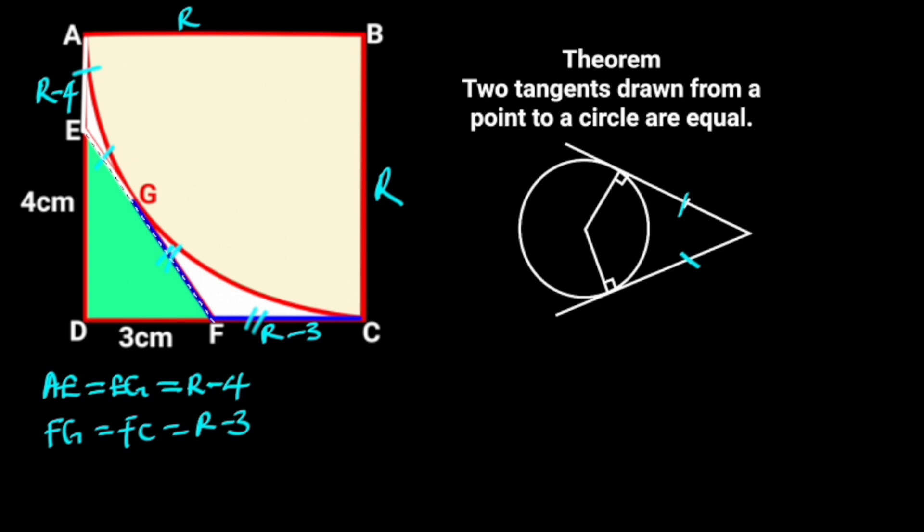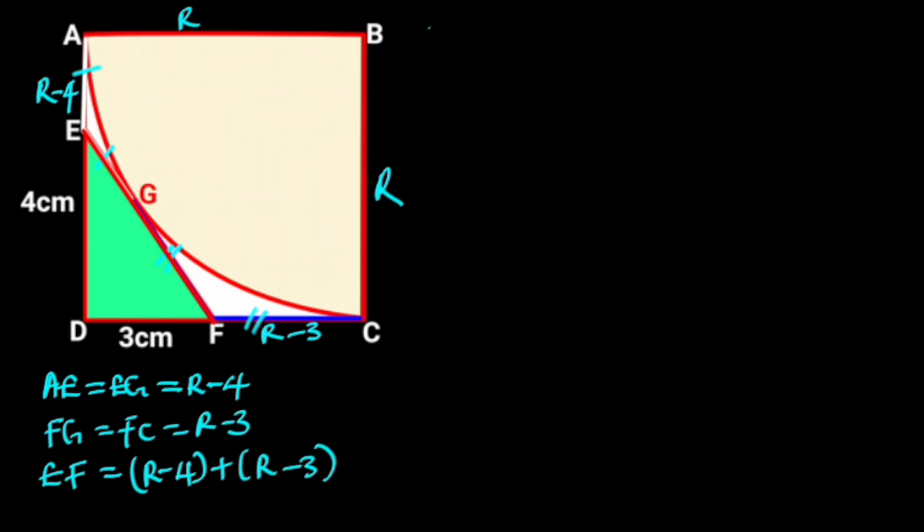Considering line EF, we can say that line EF is equal to R-4, plus R-3. Collecting the like terms together will give us EF is equal to 2R minus 4 minus 3. R plus R is 2R, and minus 4 minus 3 is minus 7. Hence, EF is equal to 2R minus 7. Let's call this equation 1.